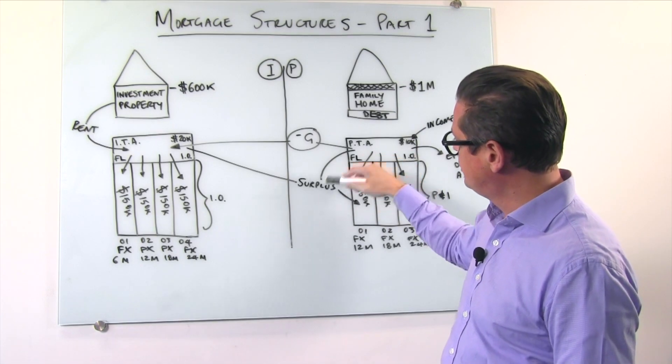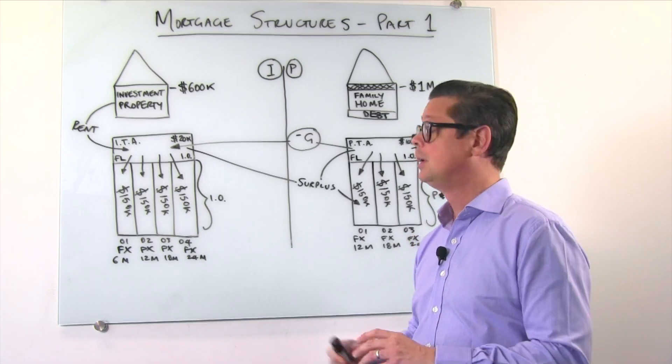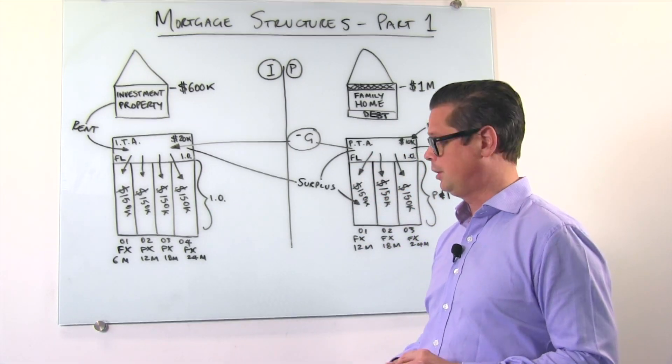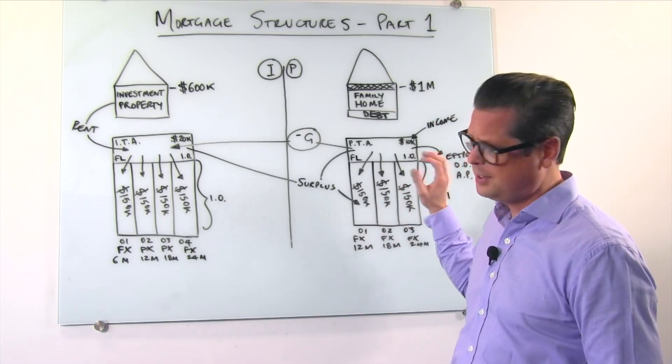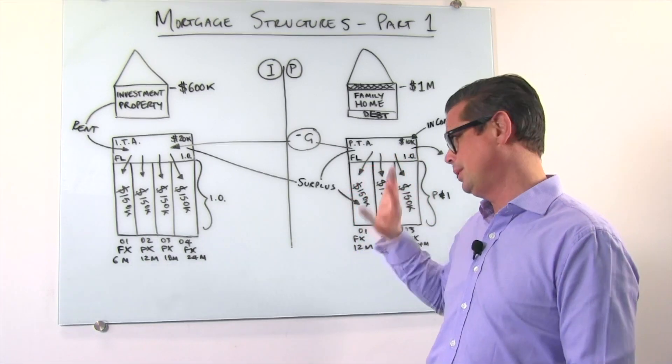Same with if you've got any surplus in your cost of living, which you should, you should be spending less than you earn. We want to have you pay your debt off as quickly as possible. Get rid of this as quickly as we can. Because this is dead, bad, monkey on your back, noose around your neck debt. We want to get rid of it.